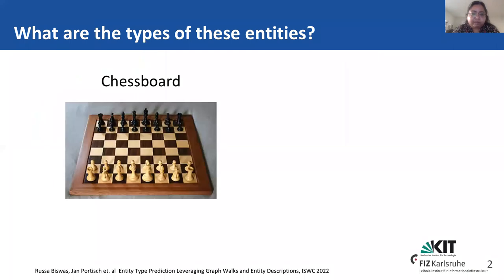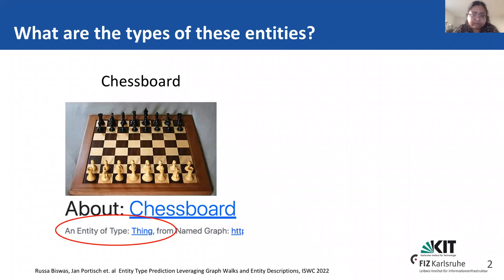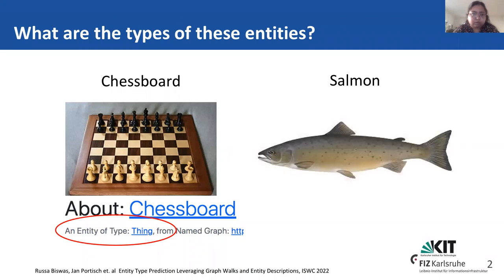If I ask you what is a chessboard, undoubtedly you would tell me that it's a game. But DBpedia tells me something different — it tells me it's a thing, which is the most coarse-grained or the general class type in DBpedia, and it practically gives me no information about this entity.